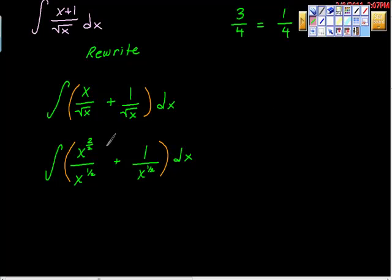Then I'm going to apply this rule for the first part. I'm going to apply the rule that says x to the m over x to the n is equal to x to the m minus n, right? One of the rules of multiplication and division of exponents.